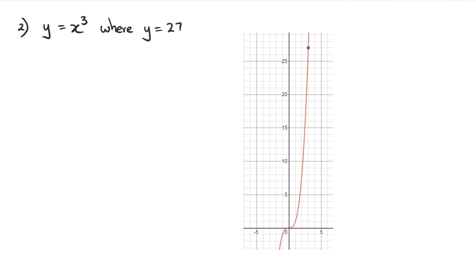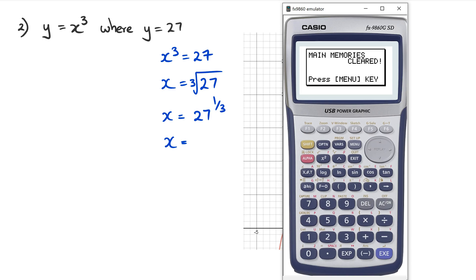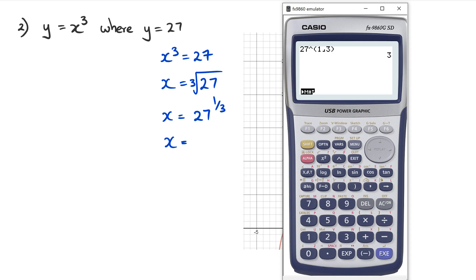The next question: we have y equals x cubed and we want to find out the gradient when y equals 27. The first step is to set x cubed equal to 27 to figure out the x value. So x equals the cube root of 27, which can be written as 27 to the power of one third. Just put one third in brackets in the calculator and you get three, so x equals three.